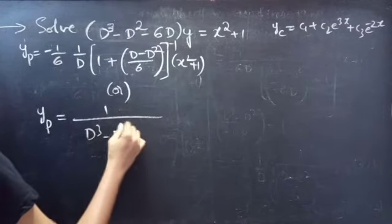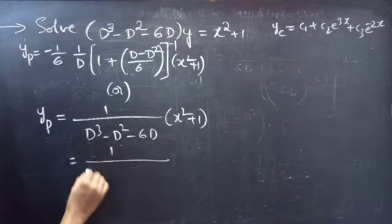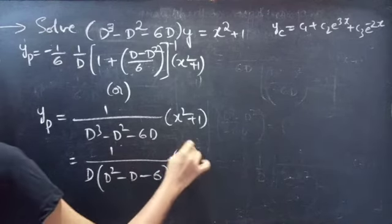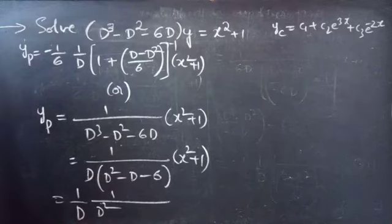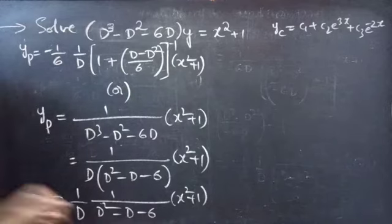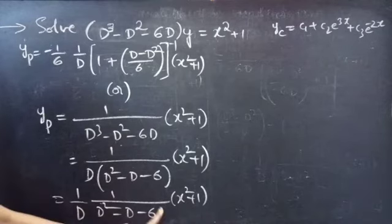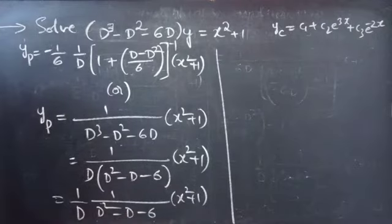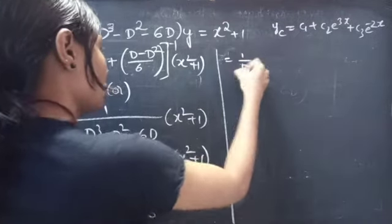Alternatively, taking D common from f(D) = D³ - D² - 6D gives D × (D² - D - 6). Then yp = (1/D) × 1/(D² - D - 6) × (x² + 1). In the denominator of the second fraction we have D² - D - 6. We can take -6 common from all three terms.